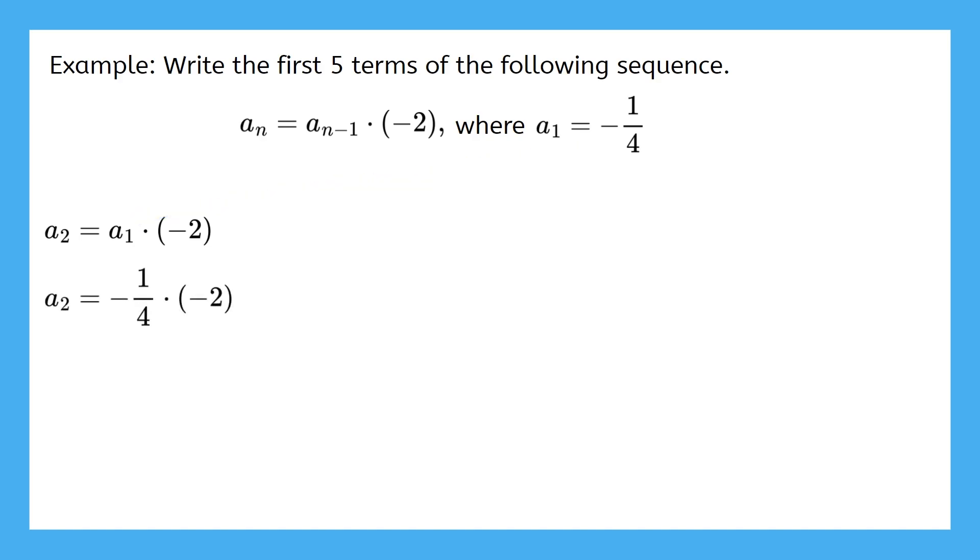So here's what a2 looks like. We'll need to substitute in a1 and then multiply that by negative 2. We'll use negative 1 fourth for a1. Now all we have to do is simplify. a2 is 1 half. So far so good. Now let's tackle a3. This time we left a blank in the formula. What do you think should go in that blank? The formula just needs us to put in the previous value, and that previous value is the 1 half that we just found. So let's simplify this to find that a3 is negative 1.